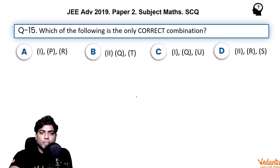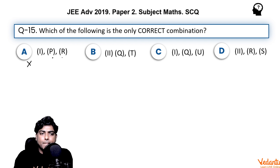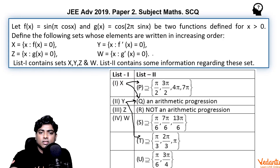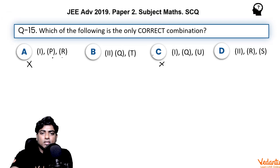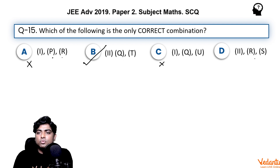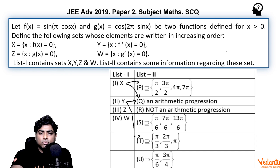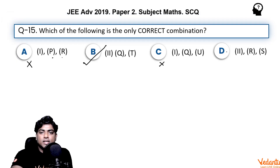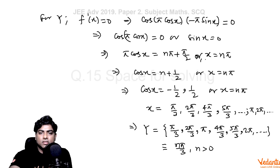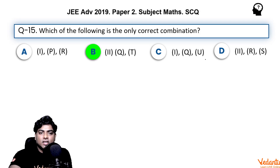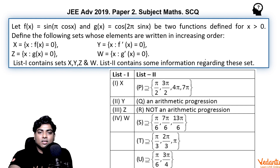Checking the options: X goes with P and Q, but option A has entry 1 with P and Q — wait, let's check. Y goes with Q and T; option B says entry 2 goes with Q and T — that is correct. Entry 2 with R and S is not correct. So the correct answer to question 15 is option B.